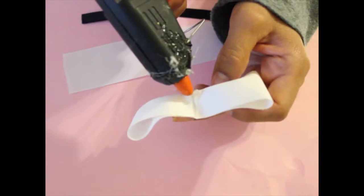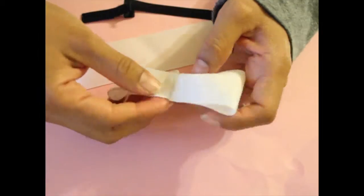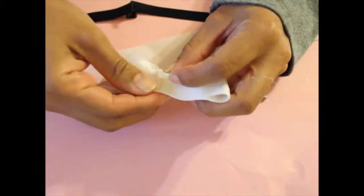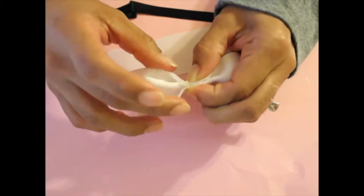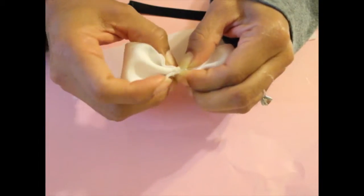Once you've done one side you can do the other, same thing on the other side. Like I said, don't put too much glue. It'll make the center too bulky and it really will look messy at the end.